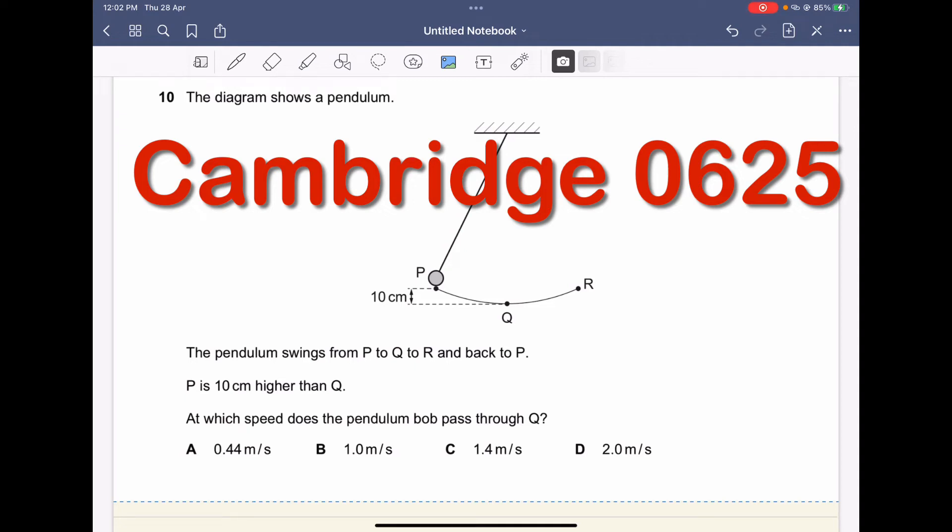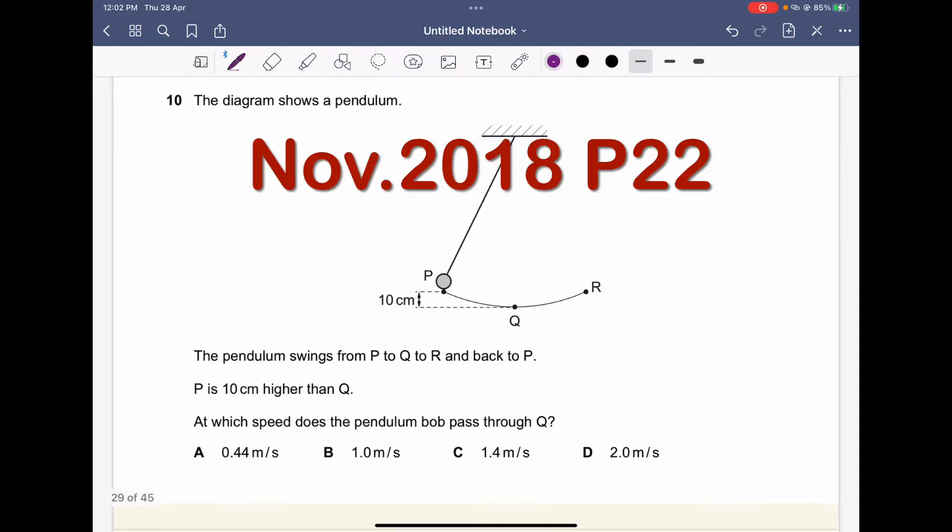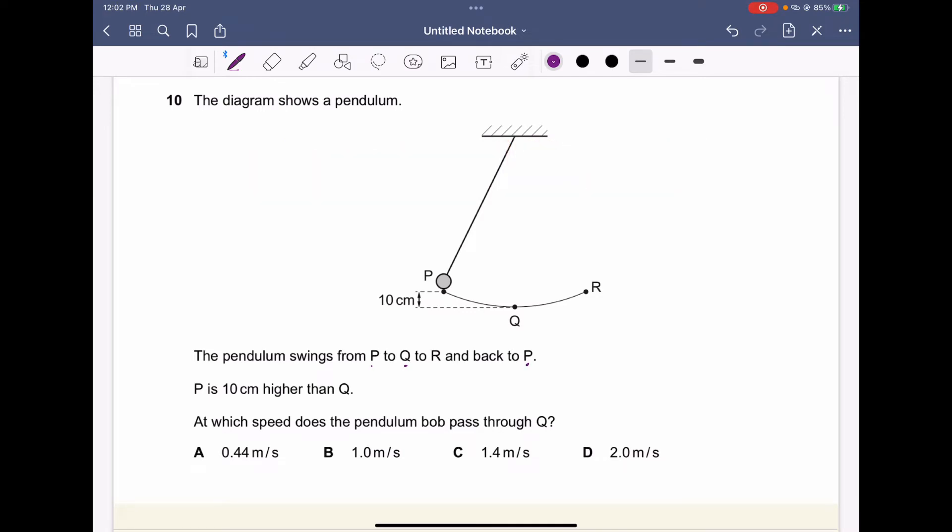Hi everyone, the diagram shows a pendulum. The pendulum swings from P to Q to R and back to P. P is 10 centimeters higher than Q, which is 0.1 meter. At which speed does the pendulum bob pass through Q?